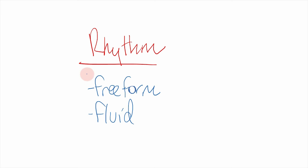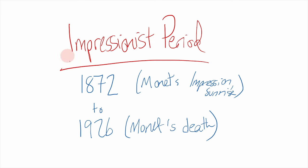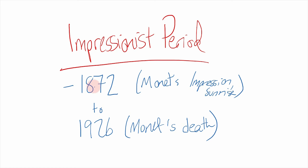The timeline of the impressionist period began in the 1870s with painters like Monet and ended in the mid-1920s or so. Impressionist music carried on beyond that point in different offshoots like neo-impressionism, but I like to think of the dates of impressionism coinciding with Monet — starting with his painting that spawned the name of the period and ending with his death.